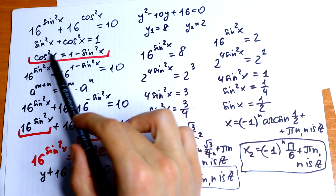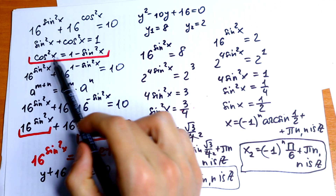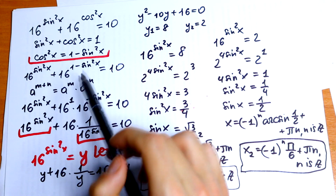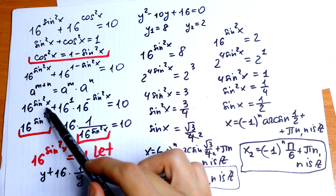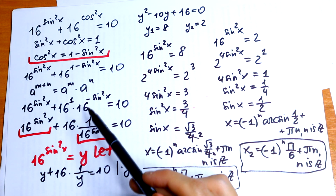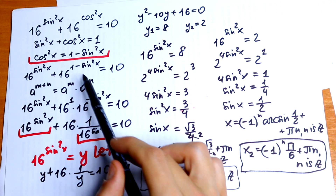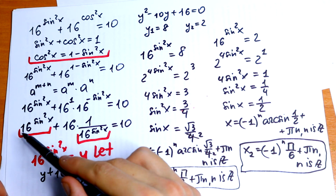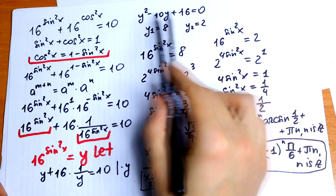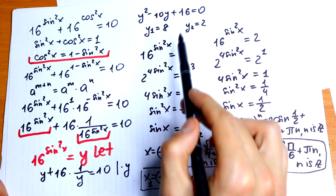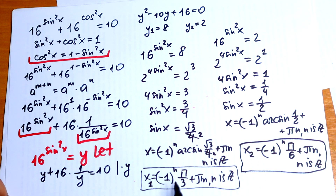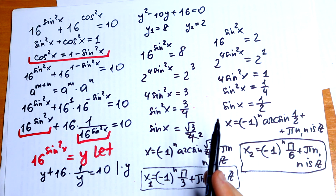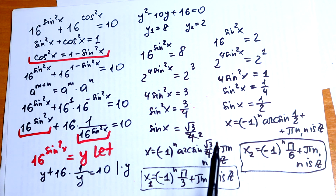In summary: first, use the Pythagorean identity to represent cosine squared through sine; that way we get the same exponents. Next, break the exponent using exponent laws. Then use a substitution to form a quadratic equation, giving two classic roots and two classic special cases. If you agree with the solution or have any suggestions, write a comment — thanks for watching, see you in the next videos.